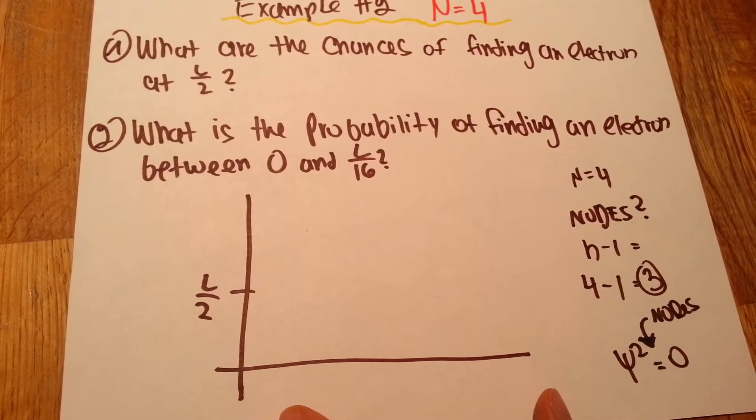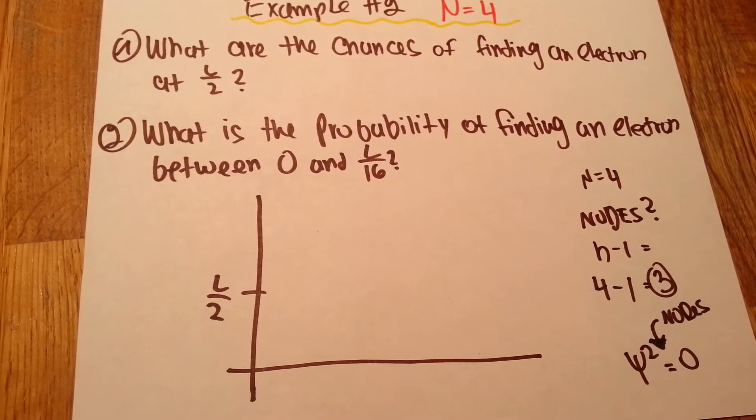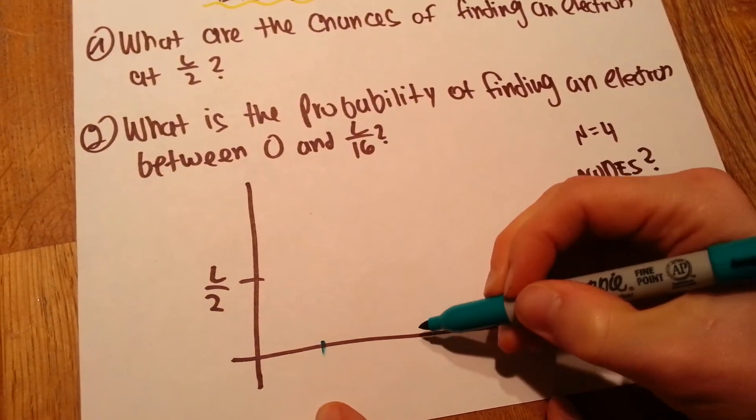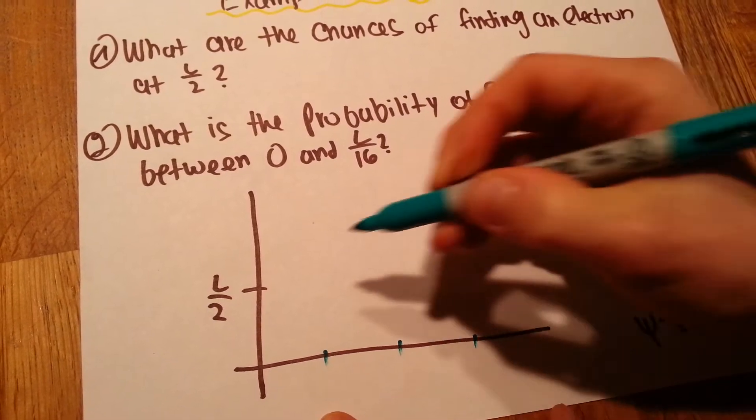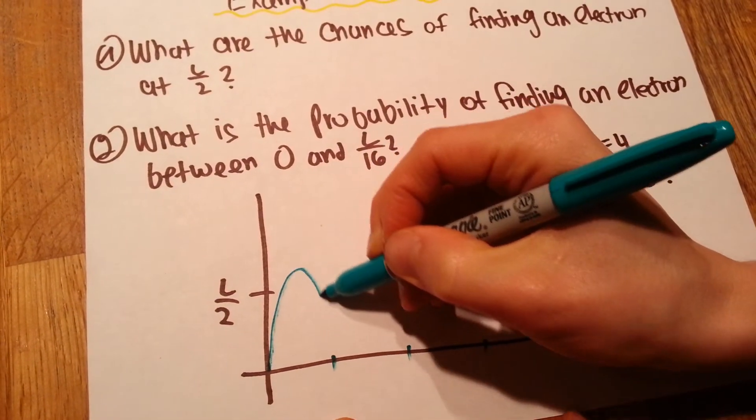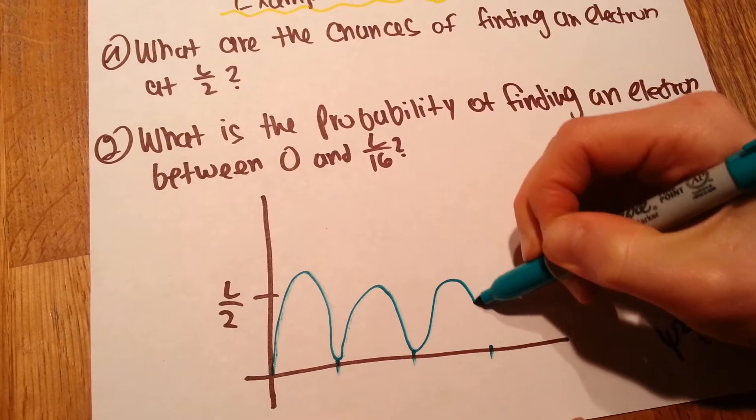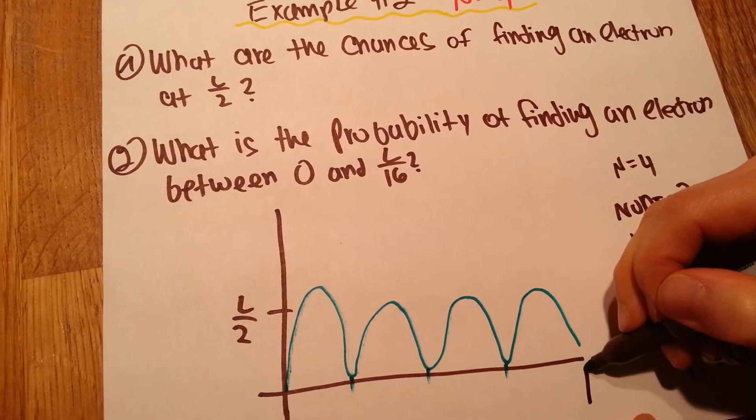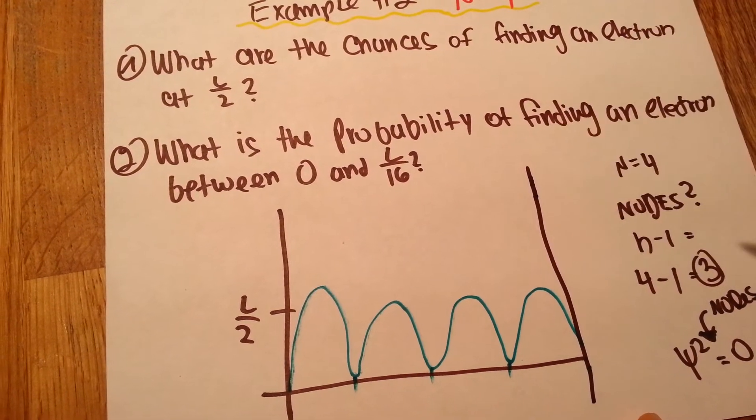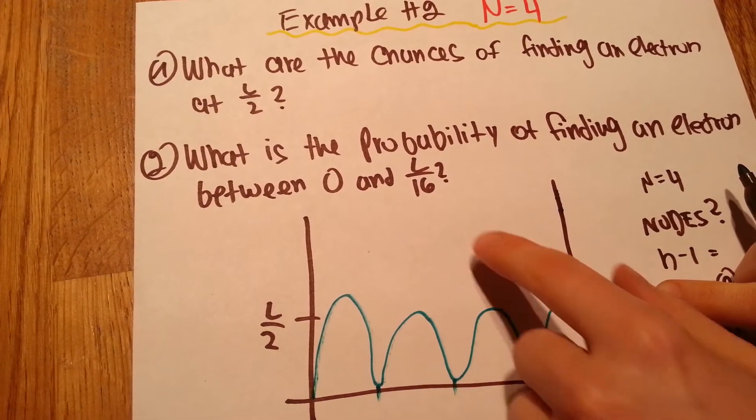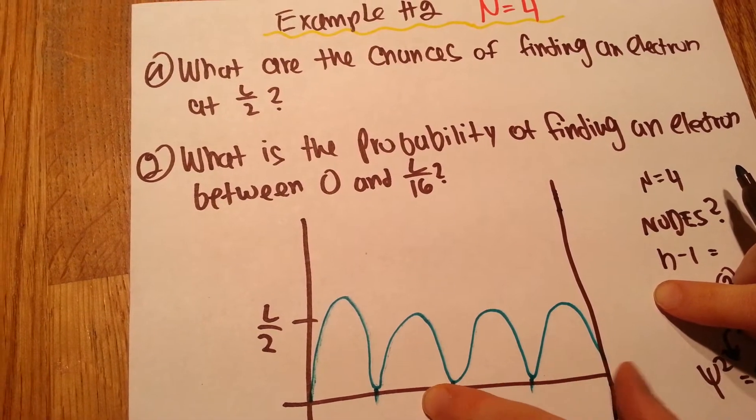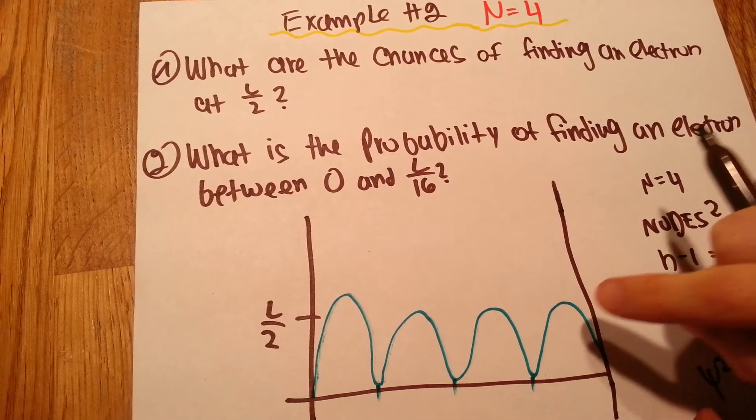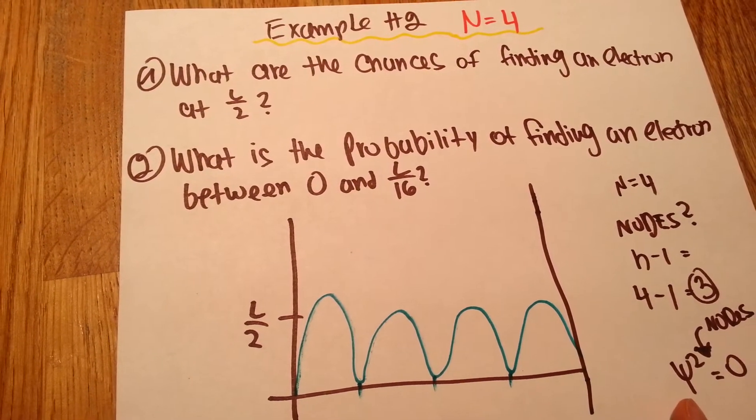Okay, so we're going to have 3 nodes. So 1, 2, 3. 1, 2, 3. This is not a node. We have a wall here. And the electron is somewhere inside, and we're trying to figure out what are our chances of finding that electron in a specific point. But we know the electron cannot escape the box.